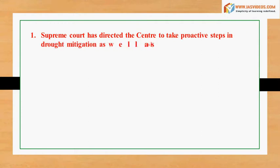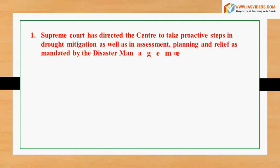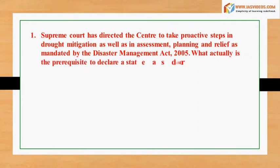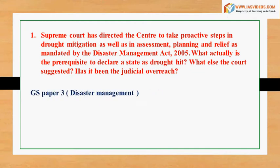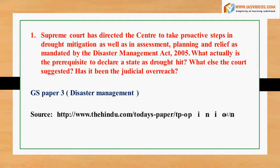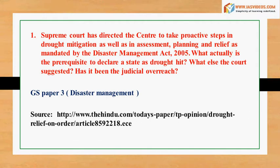The Supreme Court has directed the Center to take proactive steps in drought mitigation as well as in assessment, planning and relief as mandated by the Disaster Management Act. What actually is the prerequisite to declare a state as drought hit? What else did the court suggest? Has it been a case of judicial overreach?